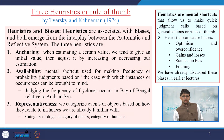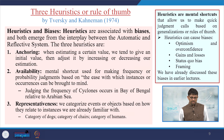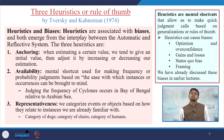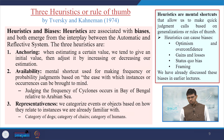Some other concepts used in NOS theory are called heuristics. There are three heuristics, or rules of thumb, as proposed by Tversky and Kahneman in 1974. Heuristics are mental shortcuts that allow us to make quick judgment calls based on generalizations or rules of thumb.